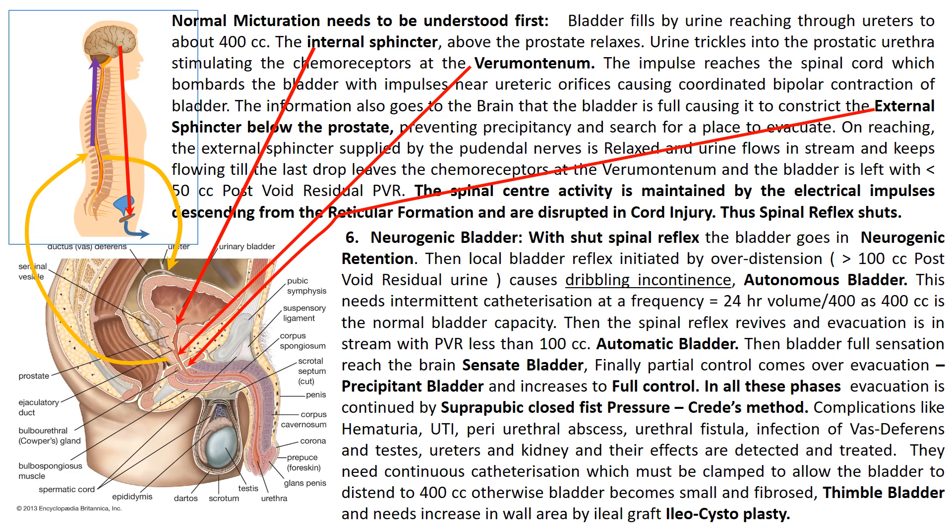The local bladder reflex, initiated by over-distension greater than 100 cc of post-void residual urine, causes dribbling — the evacuation is not in a stream, the bladder doesn't evacuate completely. This is called an autonomous bladder and should be treated by intermittent catheterization at a frequency of 24-hour volume divided by 400. For example, if the 24-hour volume is 1200 cc, dividing by 400 gives 3, so the bladder should be intermittently catheterized every 8 hours, three times in 24 hours.